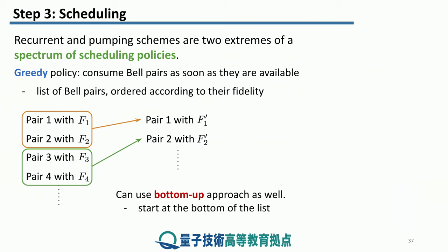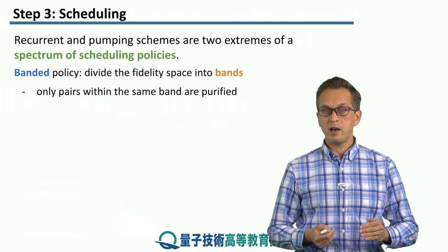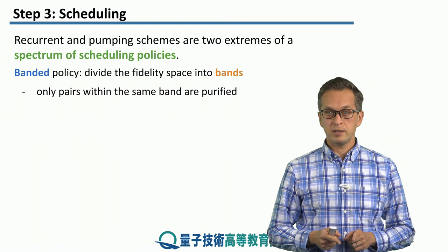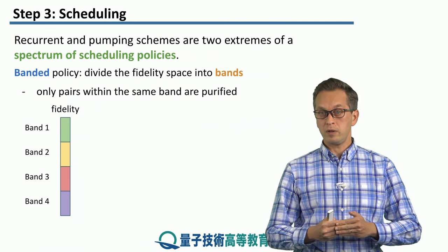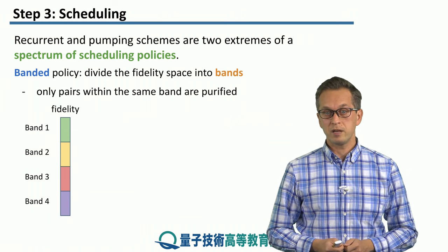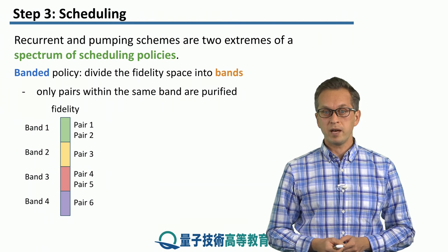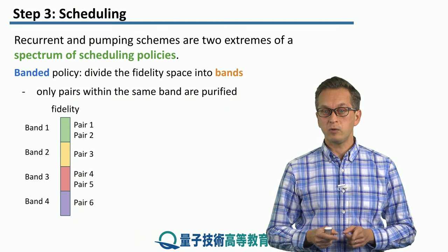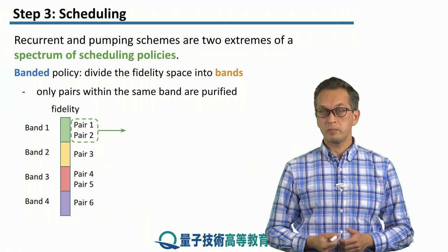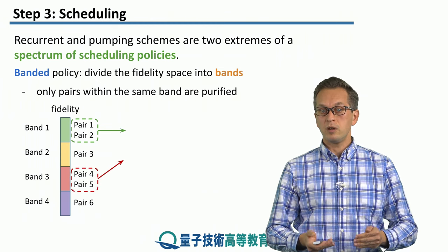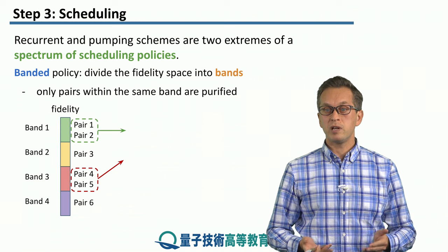What you can also do is utilize what's known as a banded policy. Here you divide your fidelity space into bands, and only pairs within the same band get purified. For concreteness, we split the fidelity space — the line from 0 to 1 — into four different bands. Let's say the first band contains pair 1 and pair 2, there's one pair in the second band, pair 4 and pair 5 are in the third band, and pair 6 is alone in band 4. So you purify pair 1 and pair 2 because they're in the same band, and you purify pair 4 and pair 5. You leave pair 3 and pair 6 untouched because they don't have any partners in the same band.